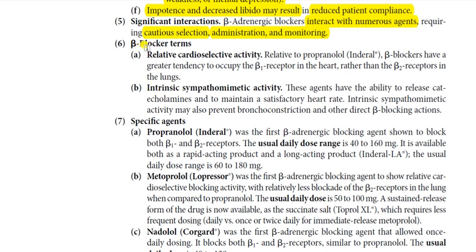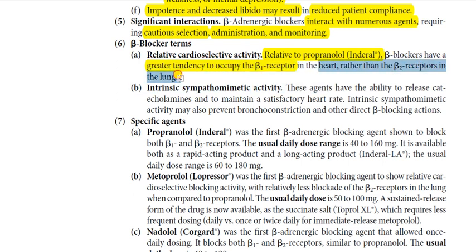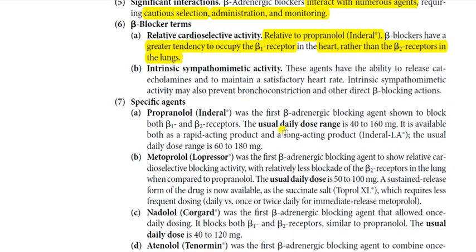Regarding beta blocker terminology: relative cardioselectivity means that, relative to propranolol, certain beta blockers have a greater tendency to occupy beta-1 receptors in the heart rather than beta-2 receptors in the lungs. Propranolol blocks both beta-1 and beta-2 receptors non-selectively.